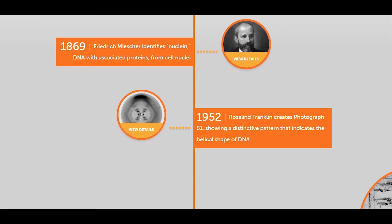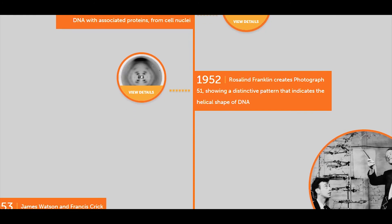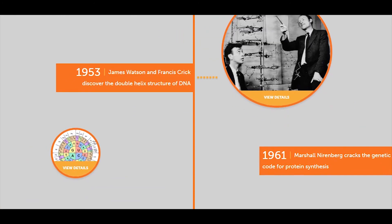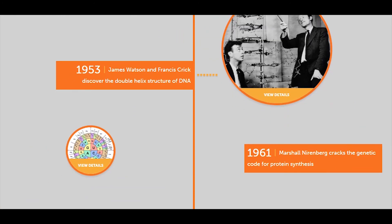In 1952, Rosalind Franklin created Photo 51, the famous photograph showing a distinctive pattern that indicates the helix shape of DNA. In 1953, James Watson and Francis Crick discovered the double helix structure of DNA and created the DNA model.